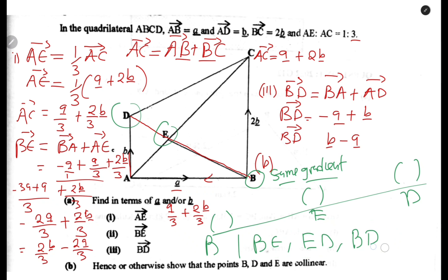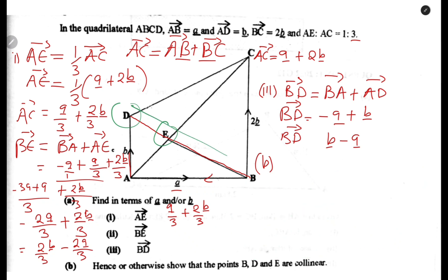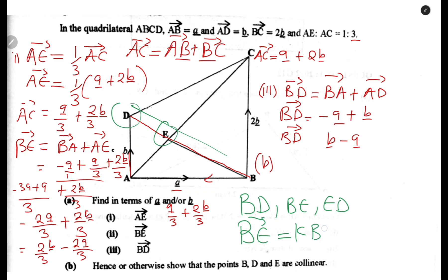If you are not given coordinates, how do you show that they are collinear? You can split BD into parts such as BE and ED. To show that they are collinear, you need to show that vector BE equals K times vector BD. Collinear vectors need to be a scalar multiple of each other — that is the condition. We have BE and we have BD, so let us check.